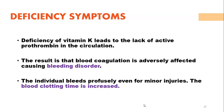Vitamin K deficiency leads to a lack of active prothrombin in circulation, causing a bleeding disorder because blood does not coagulate. Clotting factors 2, 7, 9, and 10 are dependent on Vitamin K. The individual bleeds profusely even for minor injuries, and blood clotting time is also increased.